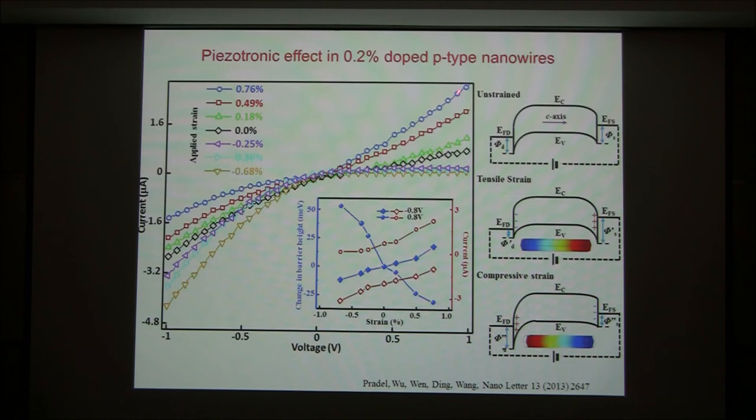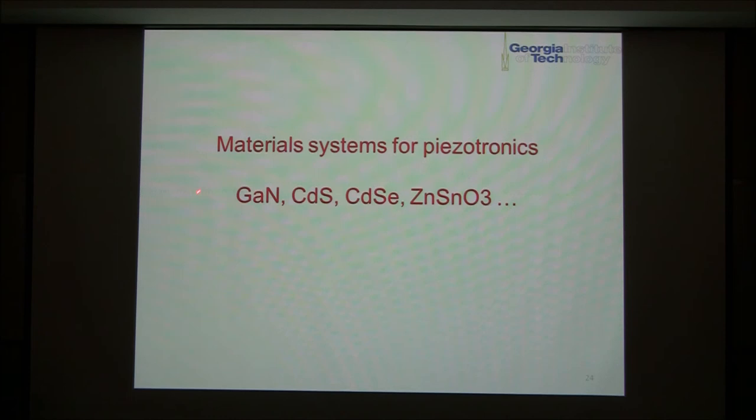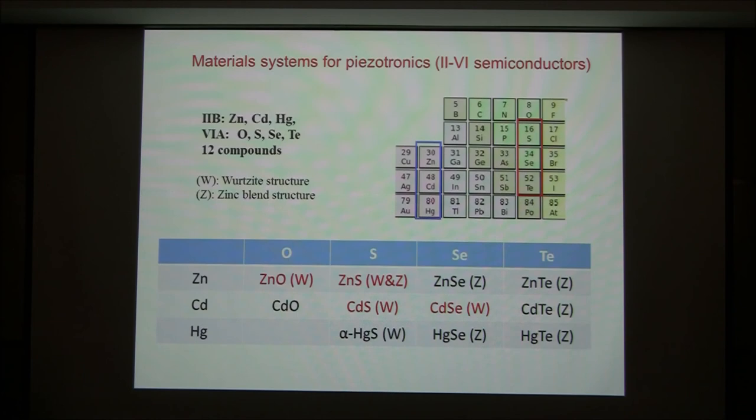This is a typical characteristic of a piezotronic transistor in P-type materials. So it can be N-type or P-type materials — both have this characteristic. It can also be applied across a range of semiconductors — it does not have to be zinc oxide. Gallium nitride, cadmium sulfide, cadmium selenide, zinc oxide — all these materials can show the piezotronic effect.